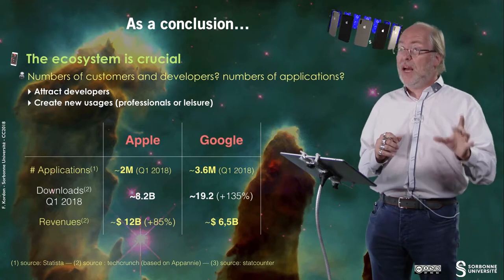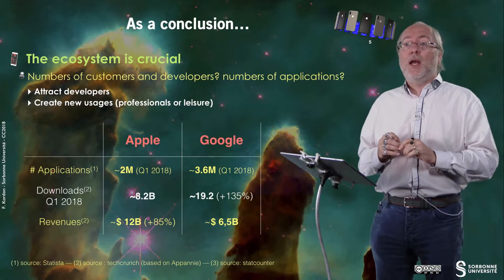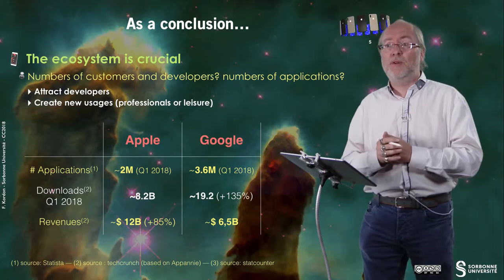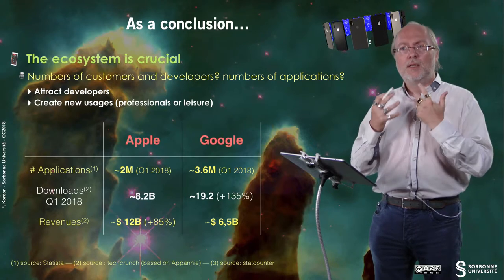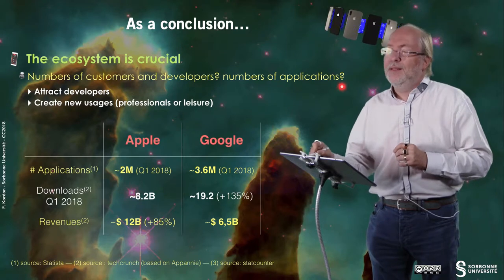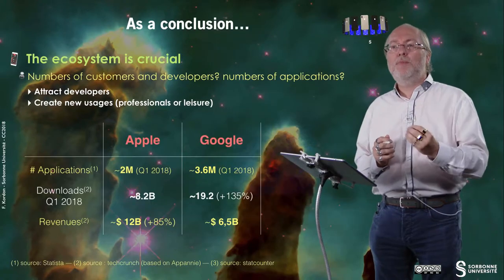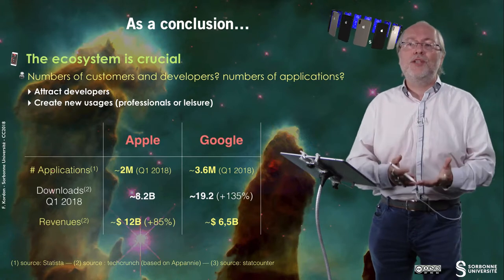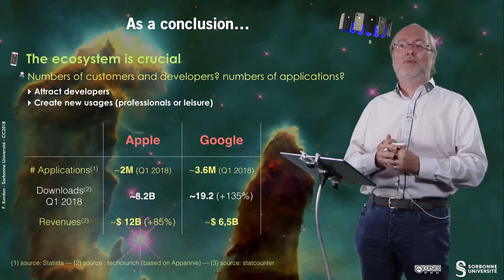This started in the early 2000s, first with the iPod and all the associated music. The two main ecosystems now are the one of Google and the one of Apple. If Microsoft's own mobile smartphones just disappeared, it's because they arrived too late to create a viable ecosystem. The ecosystem is the number of customers, but also the number of developers and the number of applications. So it's important to attract developers. Why did Apple create Swift? To have a simple language — easier to use than Objective-C — to attract more developers and create new usage. The more developers you are, the more usage you create, and then the more need you create for the associated hardware.